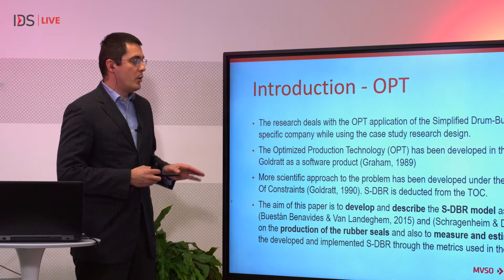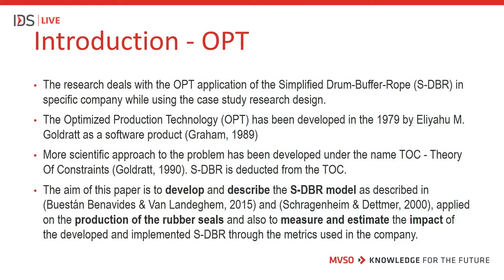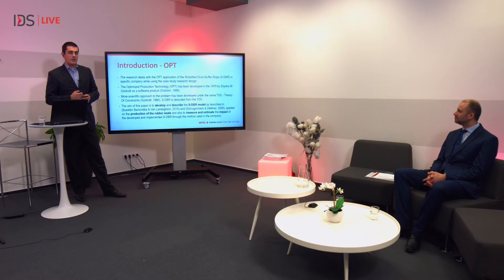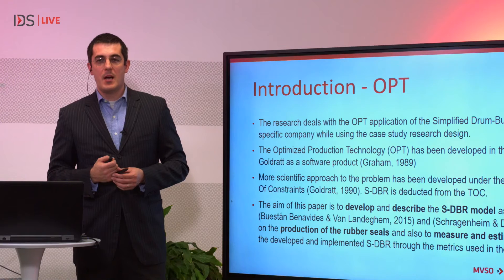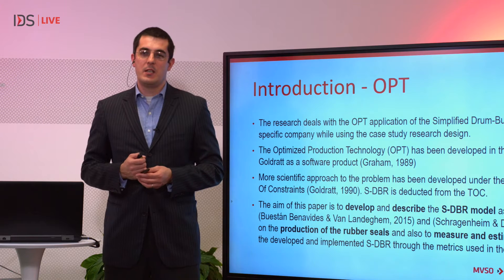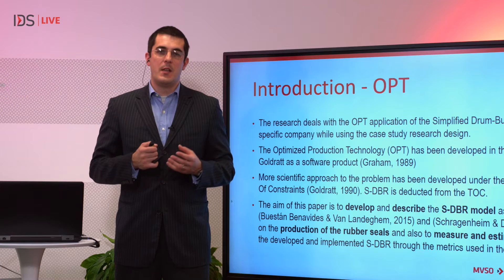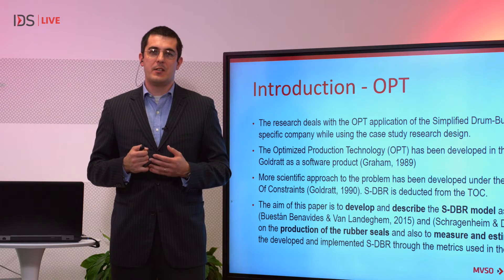OPT, or optimized production technology, is knowledge that started in the 1970s and 80s as a software product. It was hugely popular in the 80s and 90s, based on a so-called business novel, and it was grounded in the theory of constraints. The basic idea behind the theory of constraints is described by the old saying that the chain is only as strong as its weakest link.